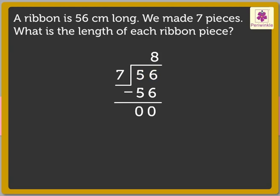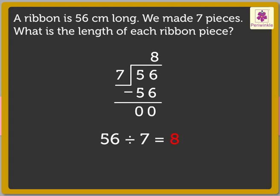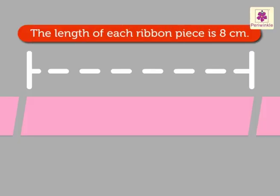Hence, we say 56 divided by 7 is equal to 8. We found the answer. Thus, the length of each piece of ribbon is 8 cm.